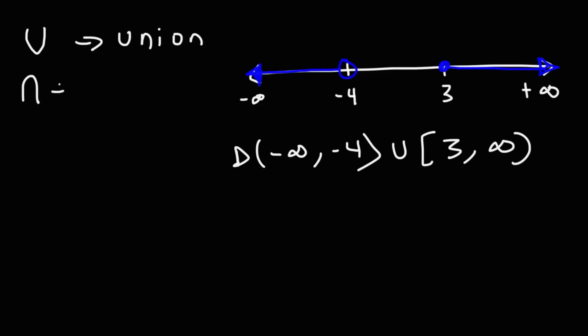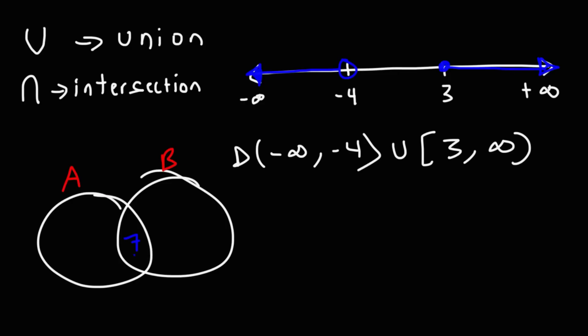This means intersection. Intersection is where the two groups, where they intersect, or they have some kind of commonality. So let's say if you have two Venn diagrams, this is A, B, and A and B share some common value. So 7 would be part of the intersection of A and B, because it's found in both. That's where they intersect.